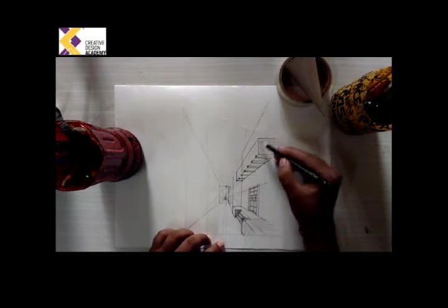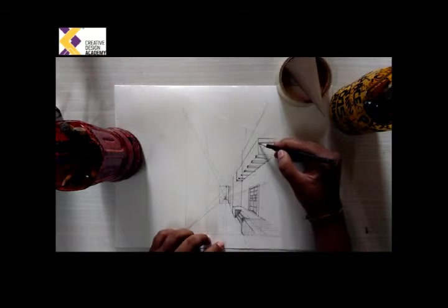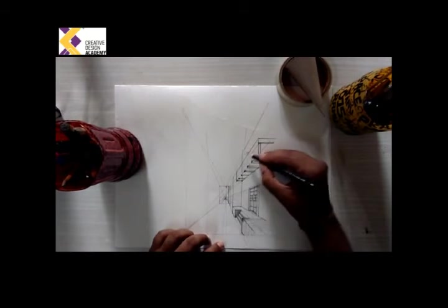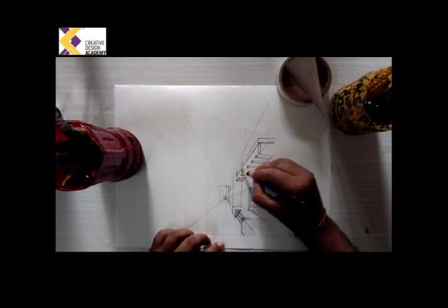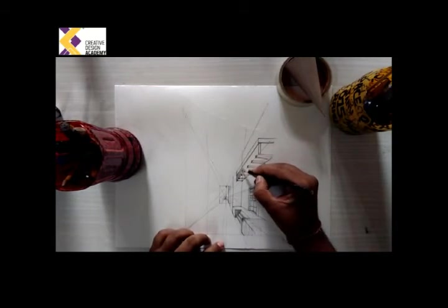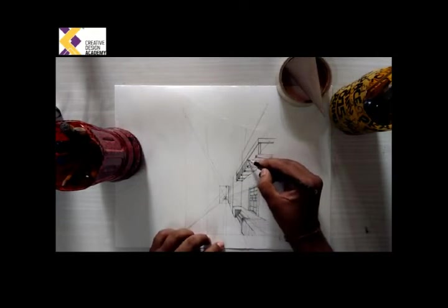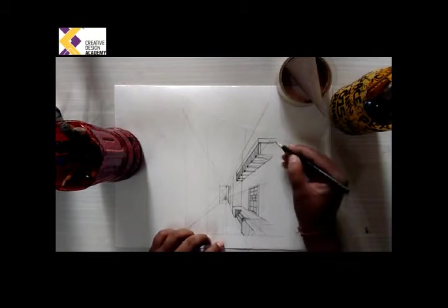This is how we connect the vanishing point and then extend it towards the front frame of our image. We close it and do a little bit of shading there. Then you can add on the details, the railing part of it, the handrail to hold.